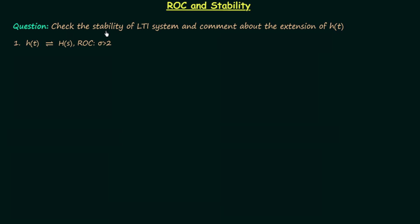In this lecture we will check the stability of LTI systems and comment about the extension of h(t), the impulse response, using the region of convergence. In the previous lecture I gave you one property: whenever the region of convergence includes the imaginary axis, the j-omega axis, the signal will be absolutely integrable and the system will be stable. Let's understand this property in more detail.